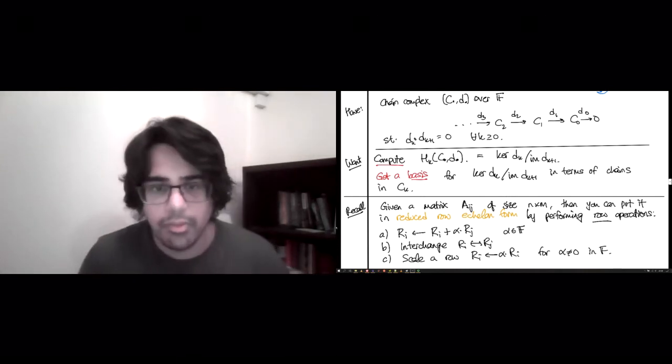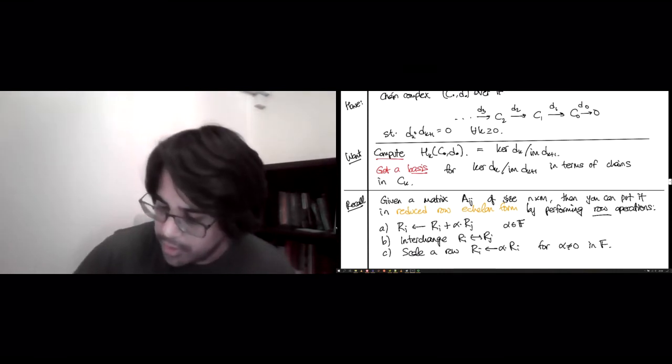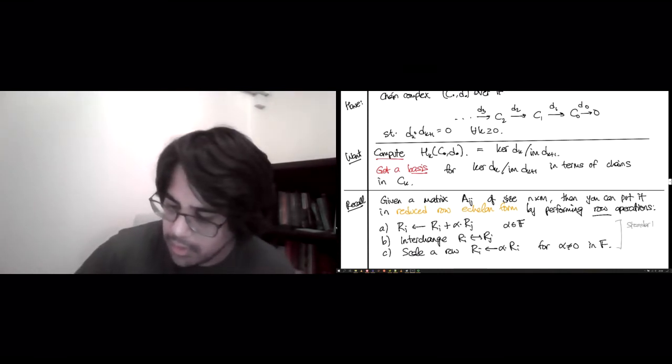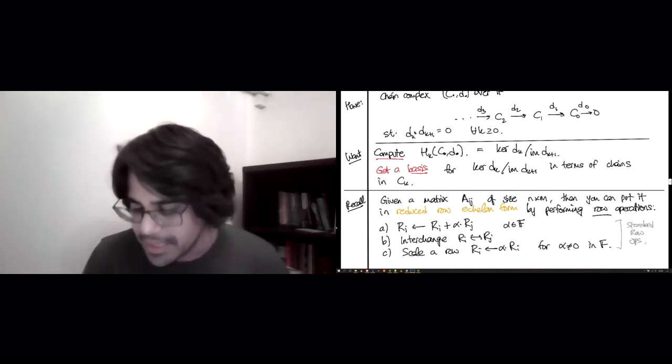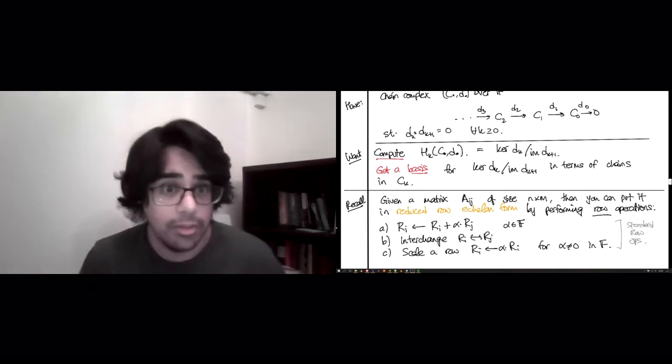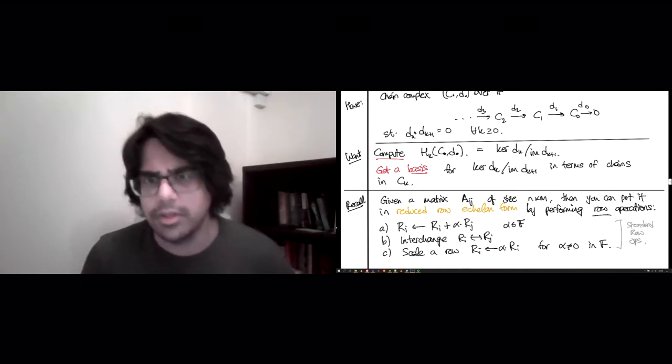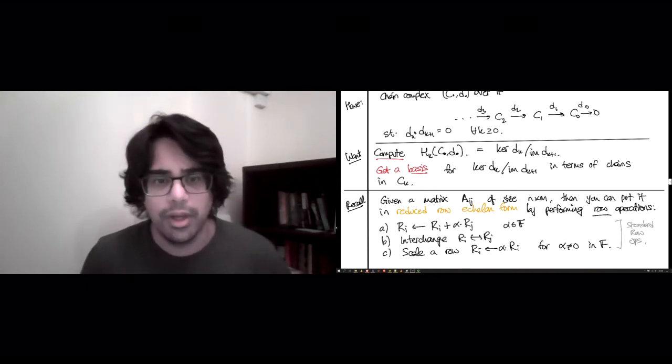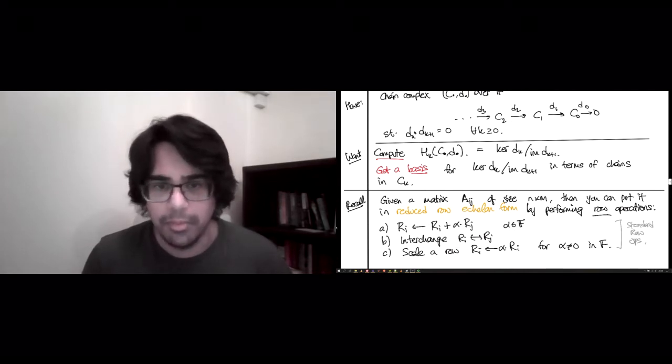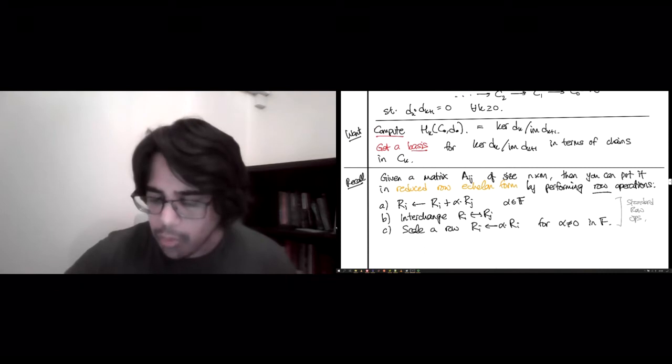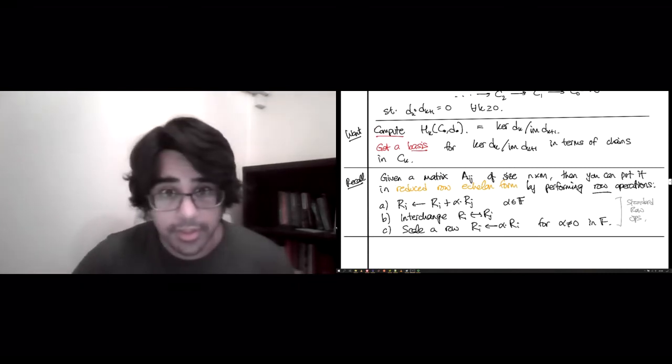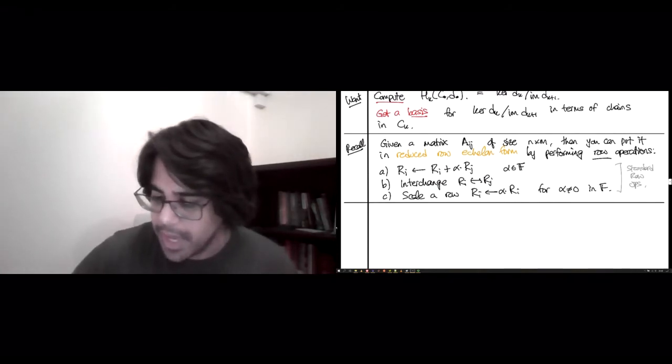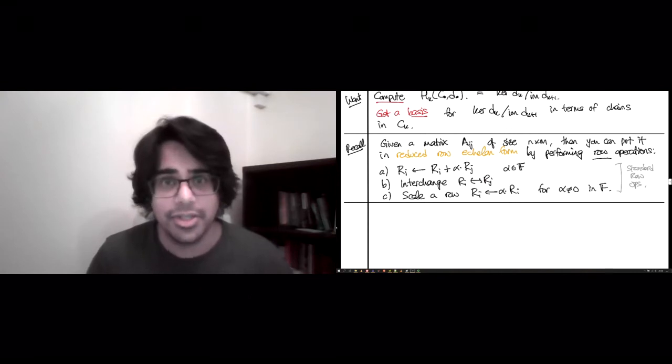B, you could interchange two rows. And C, you could scale a row. So, you could get ri, the new ri is alpha times ri for some alpha not equal to 0 in F. So, these were three row operations. And I'll call them standard row ops. And of course, you can easily imagine having exactly the same three such operations for columns, which is what you'd use to put the transpose of A into echelon form.